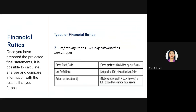The third type is profitability ratios, usually calculated as percentages. Profitability ratios tell investors about a company's profit and give a clear picture of the company's profitability at various stages of operations. These include gross profit ratio, net profit ratio, and return on investment.